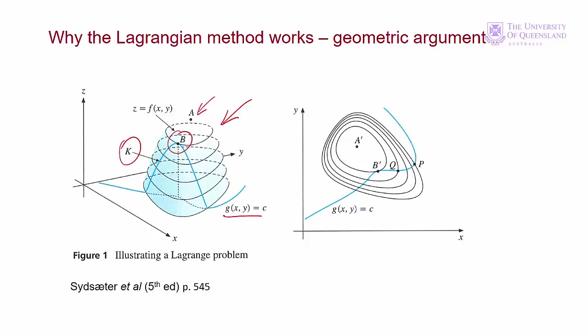This diagram is similar to the one we looked at earlier, but this one has level lines drawn on it. The level lines are similar to the contour lines on a map that show height. On the right we see the level lines projected onto the xy plane with the constraint also shown. Curve k reaches the maximum and just touches this level line. At the optimal point b — shown as b' on the right — the level line and the constraint have the same slope, so we can draw a tangent to both lines at that point.